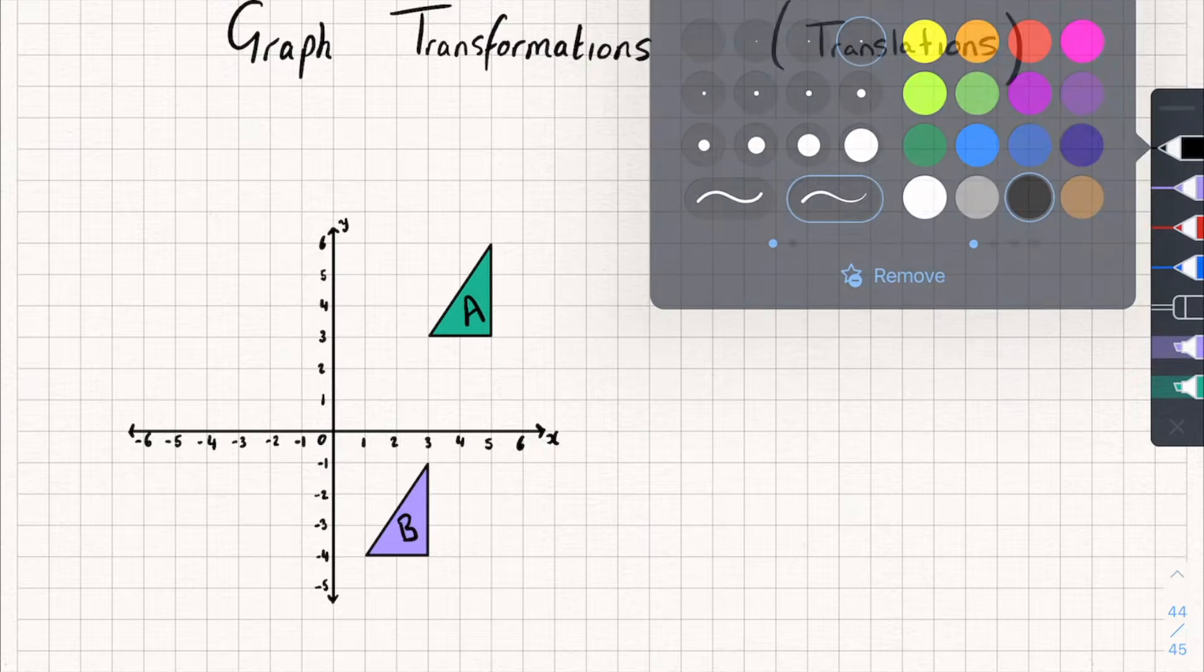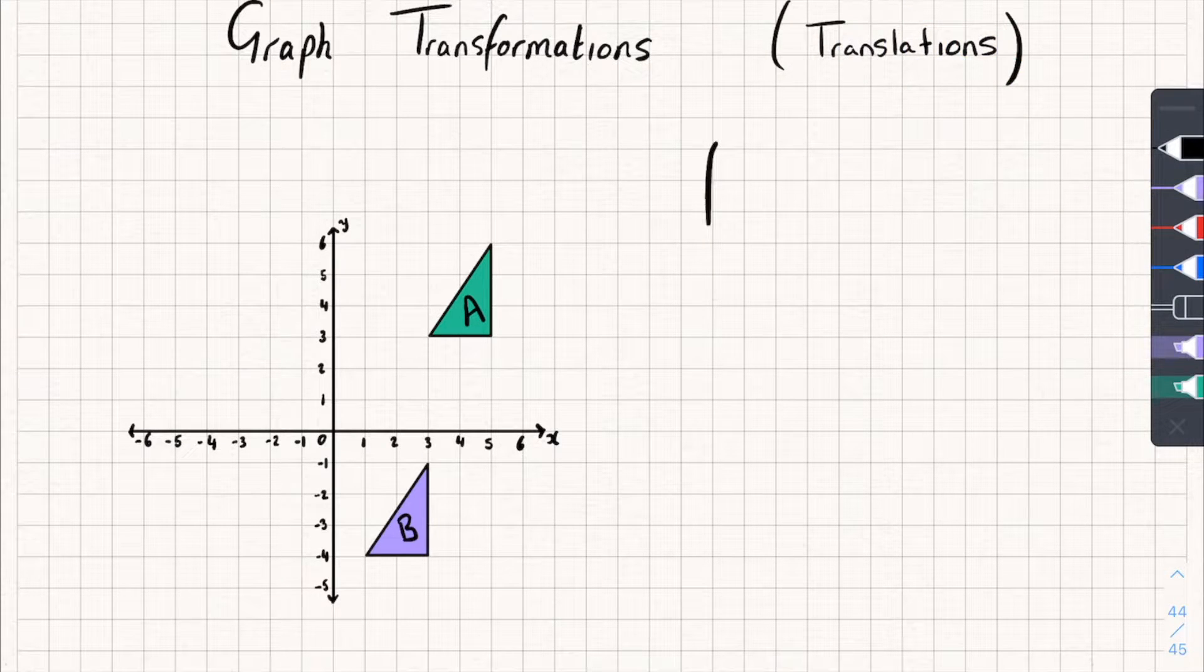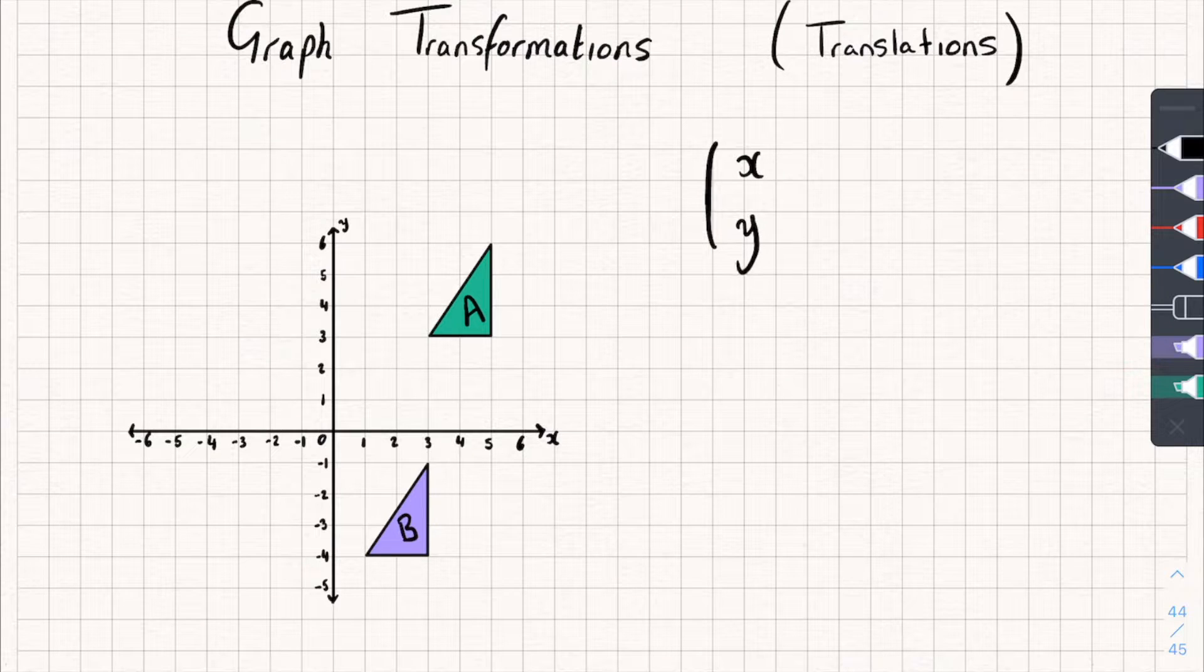So how do we describe these translations? Well, we use vectors. So vectors look something like this, where we've got x and then y.